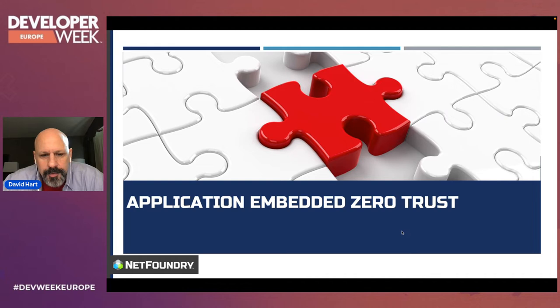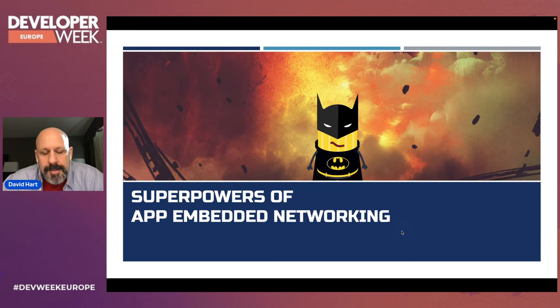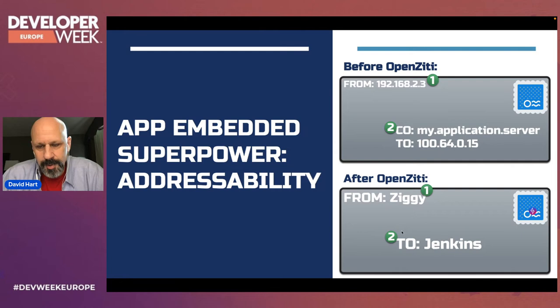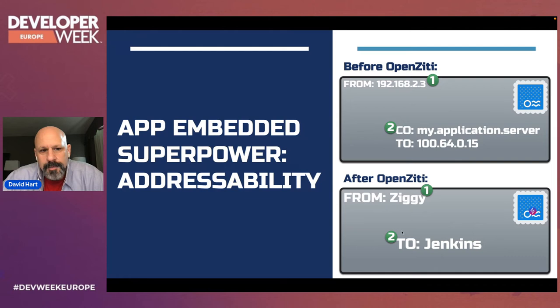Moving into application embedded zero trust in more detail — our friend Ziggy is back. App embedded networking provides superpowers to your application. One superpower relates to the emergent property of not caring about IP addresses. Previously, if I wanted to send something to an application, it would go from some IP address to another, maybe accessed via DNS. With ZD, you don't care anymore. Who's this coming from? Maybe it's Ziggy. Where's it going? I'm sending a message to Jenkins. Worrying about DNS and IP addresses is totally abstracted and no longer a concern for the developer.